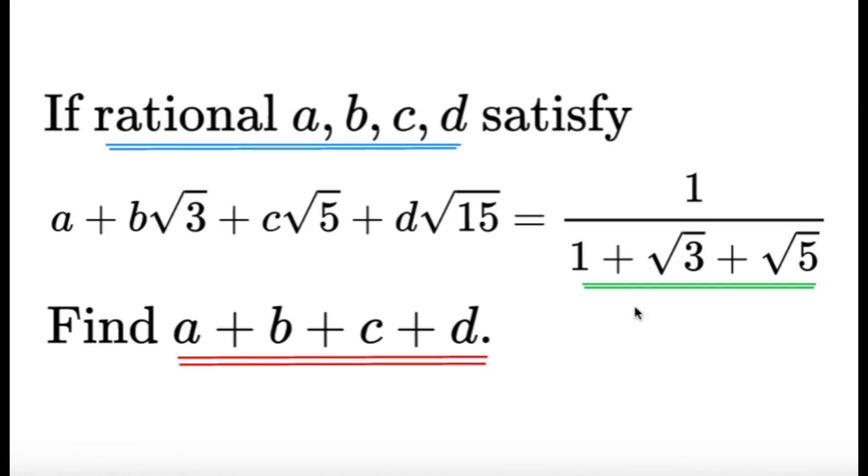Now essentially, we have this expression on the right is equal to this when expressed in a more simple term, which means we're motivated to rationalize this because here we have an ugly fraction, so let's try to rationalize that and see what we can get.